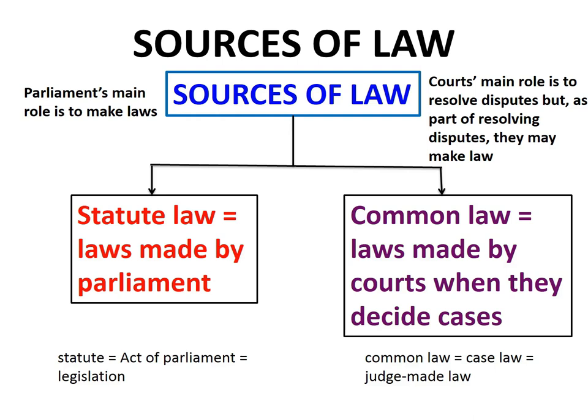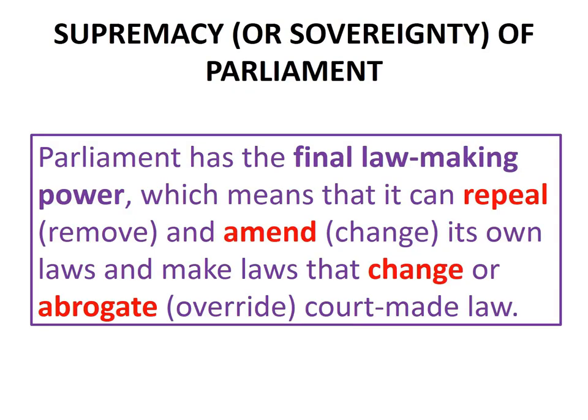Unlike the courts, Parliament's main role is to make laws. The laws that are made by Parliament are called statutes. Statutes are also known as acts of Parliament or legislation. There is a very important principle you need to understand when talking about the power of Parliament to make laws — this is the principle of the supremacy or sovereignty of Parliament. According to this principle, Parliament has the final law-making power.